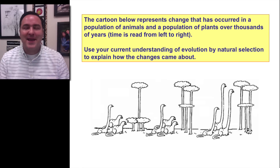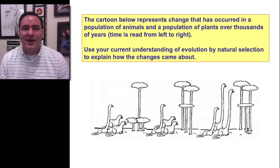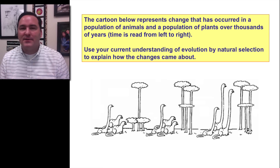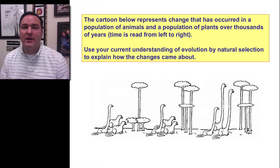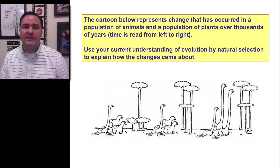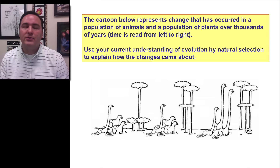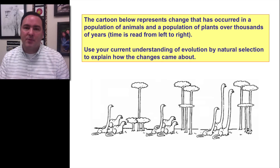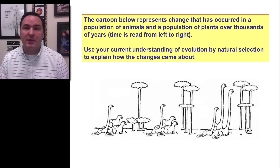So that brings us to the end of our natural selection postulates lecture. What we have done in this lecture is demonstrated that indeed evolution does happen via natural selection. We've shown an example with beaks of birds, we've talked about other examples, and it is this type of evolution that is responsible for much of the change that has occurred over the billions of years of life on this planet.